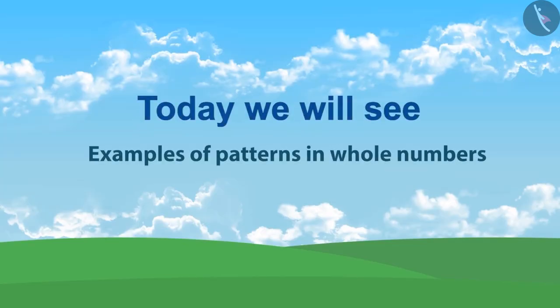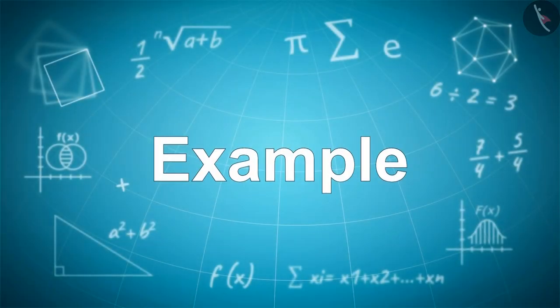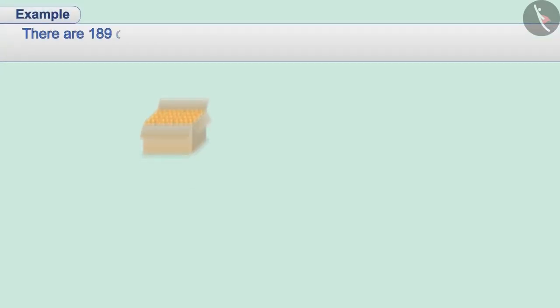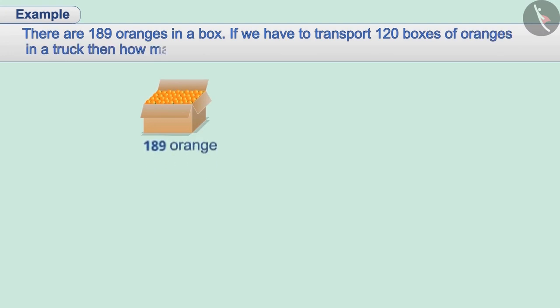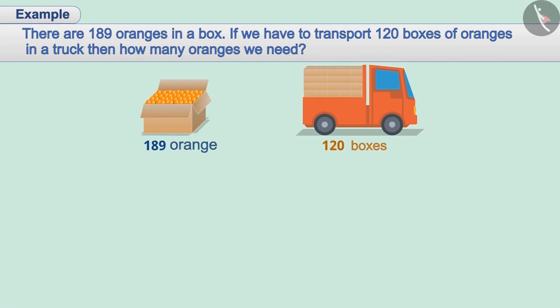Today we will see some examples of patterns in whole numbers. We can store 189 oranges in a box. If we have to transport 120 boxes of oranges in a truck, then how many oranges do we need?